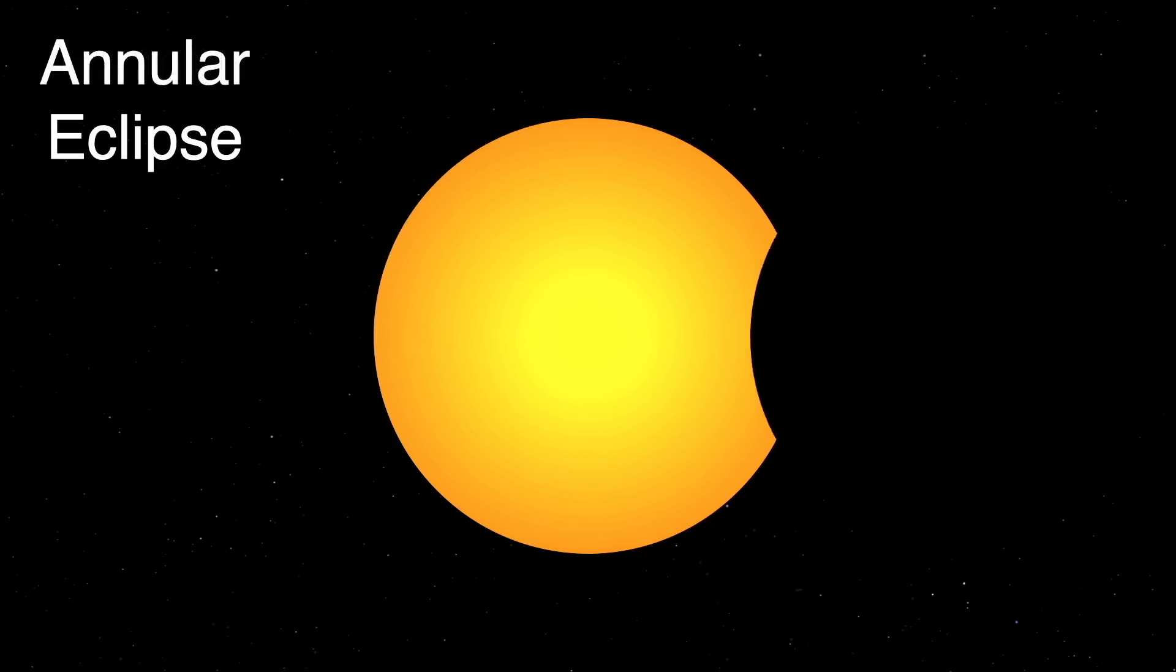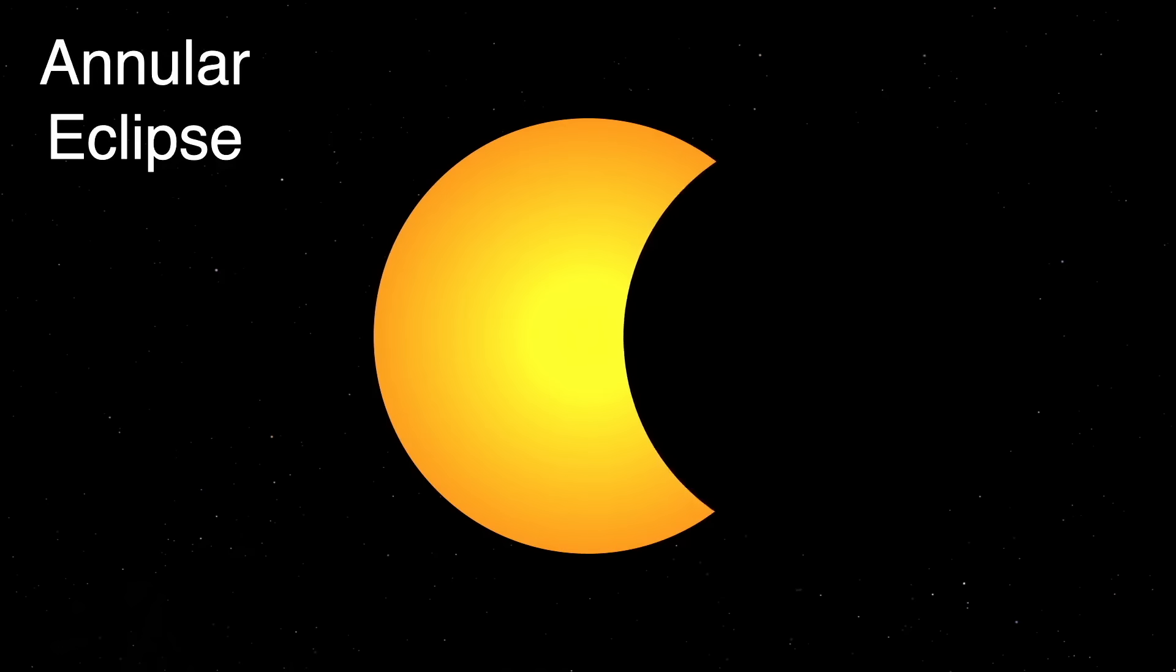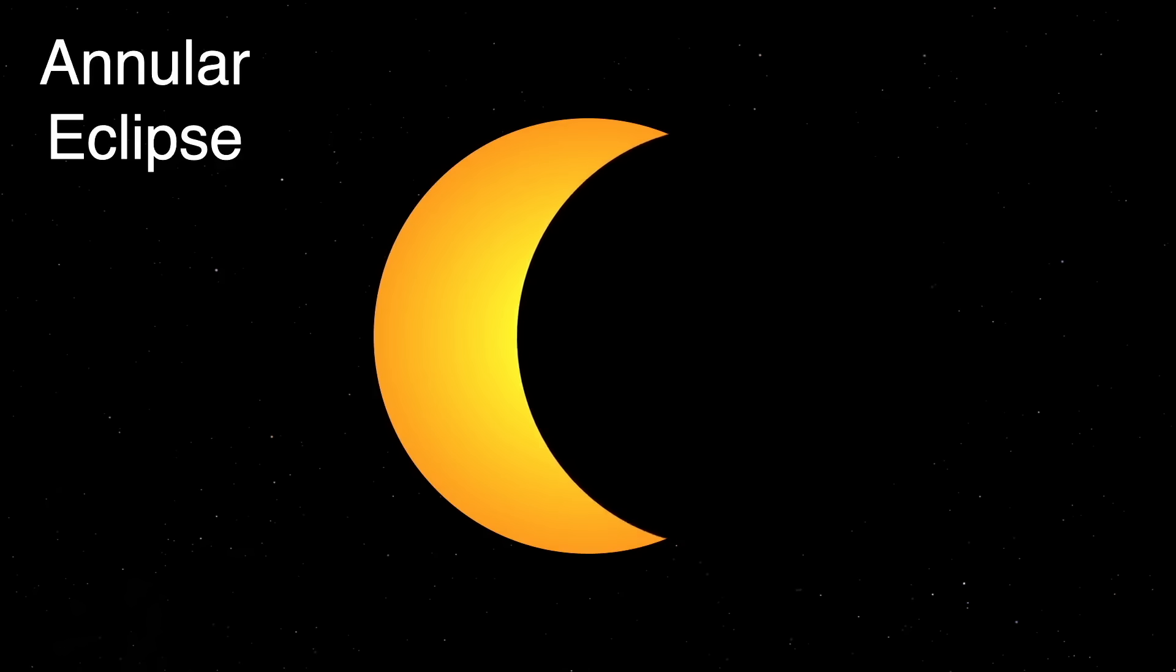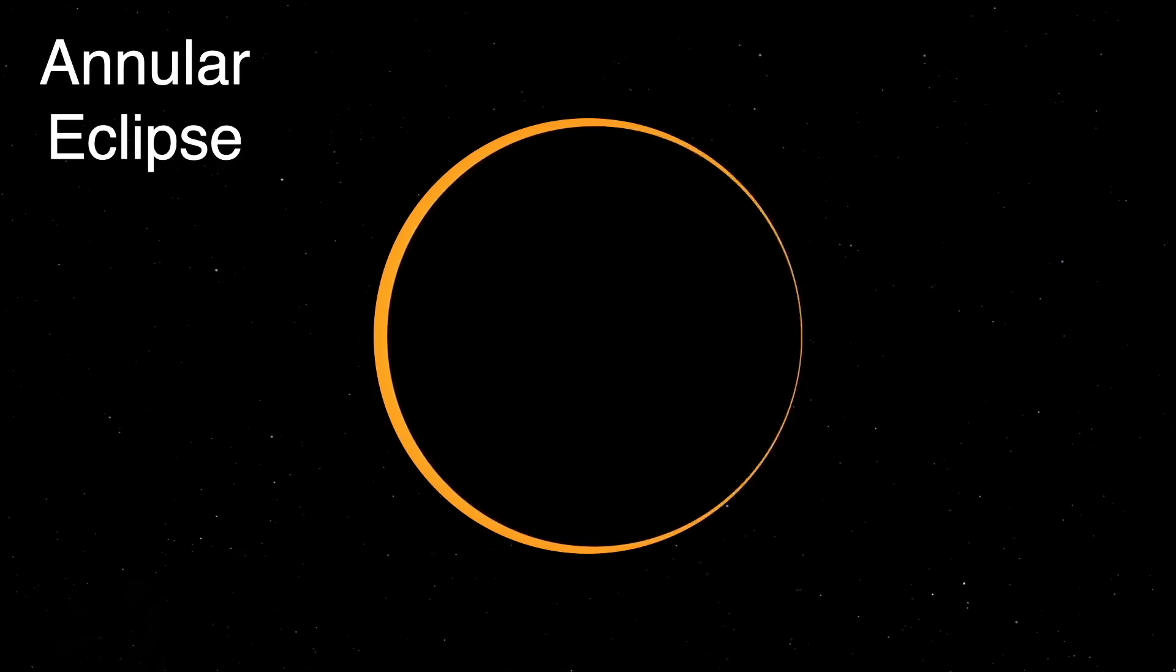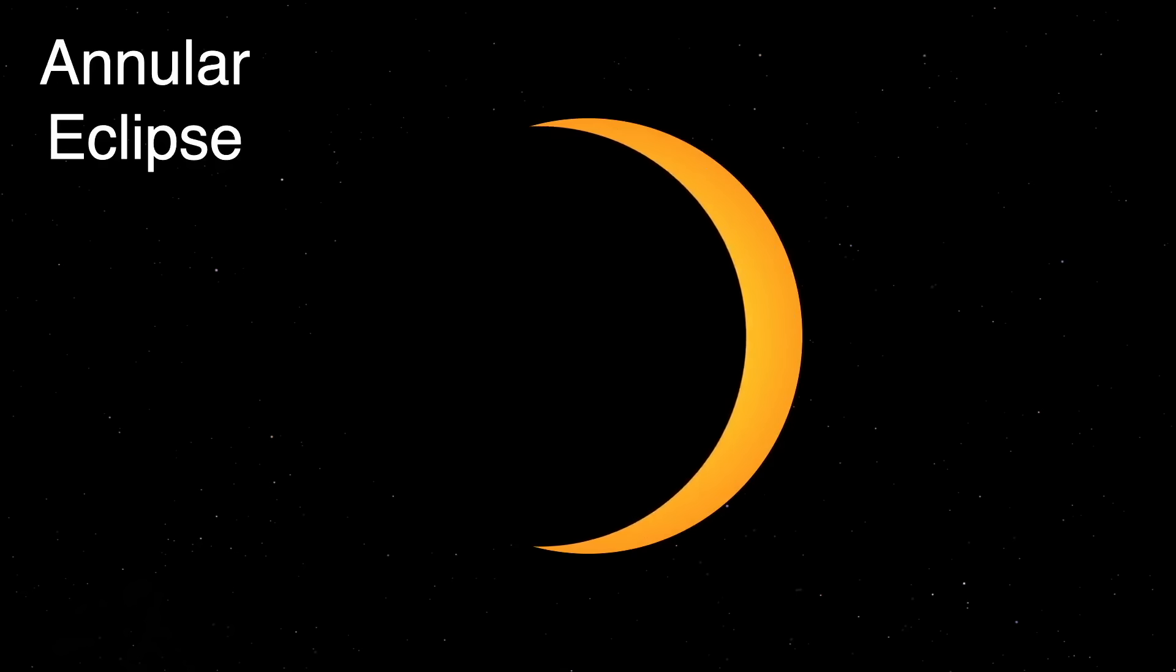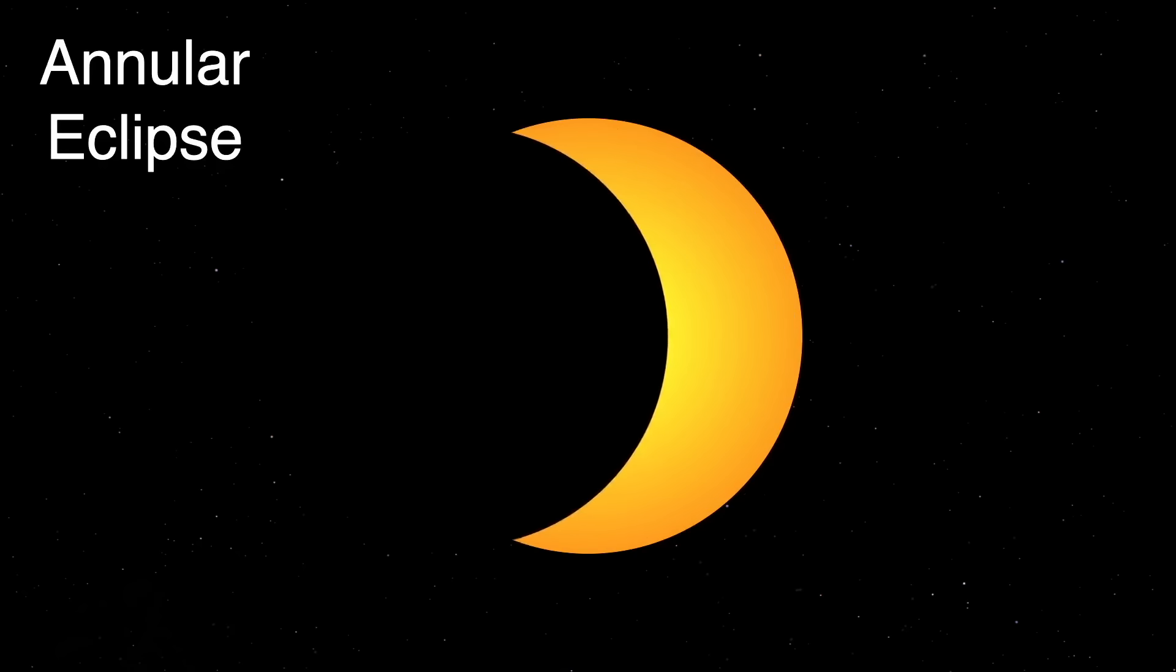In an annular eclipse, you're on the centerline, but the moon is too far from the earth, and or the earth is too close to the sun, or both, and the moon's disk cannot block the entire solar disk. The moon leaves a ring, or annulus, of the sun showing. We saw this type of eclipse last year in 2023.